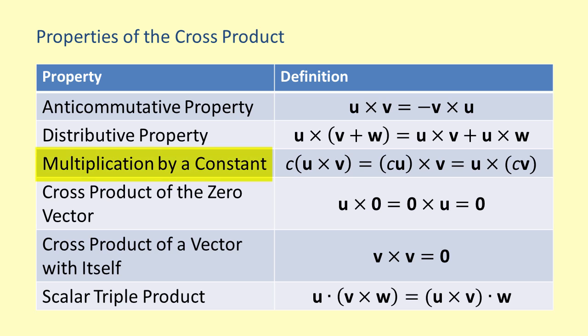Next, we have the multiplication by a constant property. This property states that a constant times the cross product of two vectors is equal to the cross product of either the first vector times the constant with the second vector, or the cross product of the first vector with the second vector times the constant. Notice that the constant does not apply to both vectors when taking the cross product, which is different than what we would typically expect.